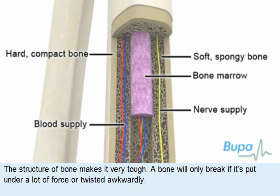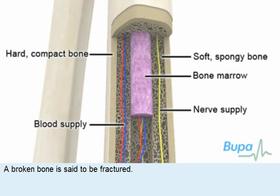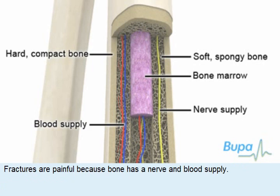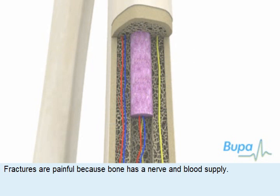The structure of bone makes it very tough. A bone will only break if it's put under a lot of force or twisted awkwardly. A broken bone is said to be fractured. Fractures are painful because bone has a nerve and blood supply.